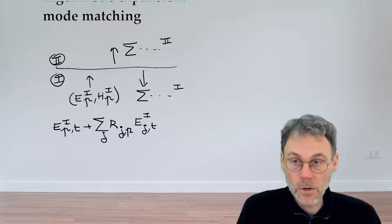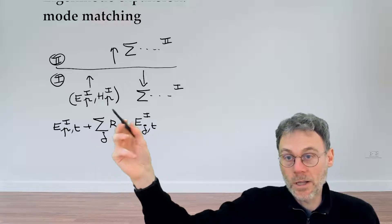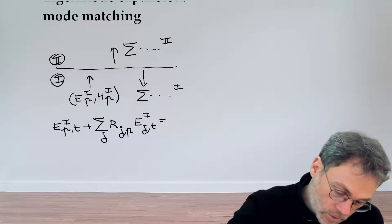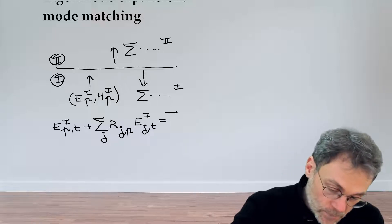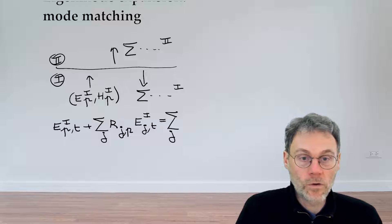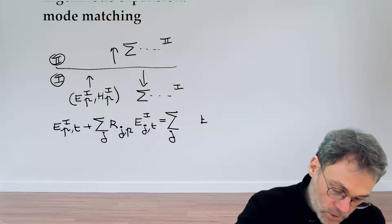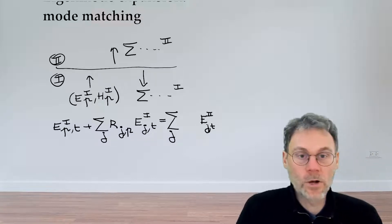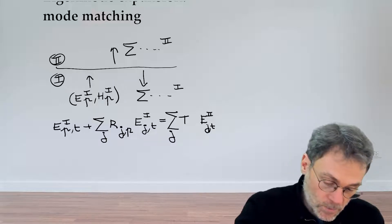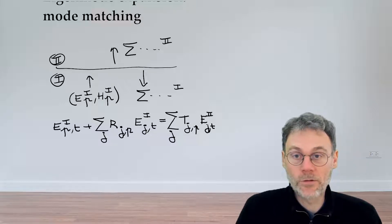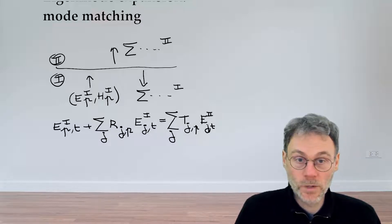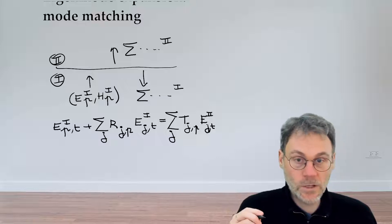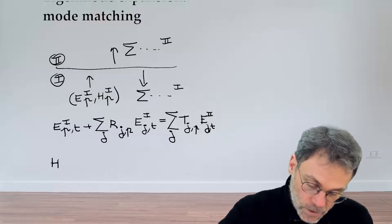So this is the tangential electric field on one side of the interface, and it should equal the field on the other side. There we play a similar game: we expand over all eigenmodes j in the second layer, looking at the tangential electric fields in medium two, with transmission coefficients t_jp that will differ depending on which input mode p we excite. This nicely expresses the continuity of the electric fields on both sides of the interface.